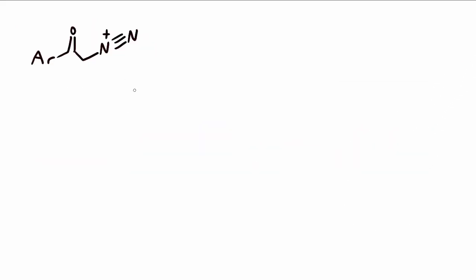And the thing about these alpha diazo ketones is they very much like to lose nitrogen. You can see that's basically just a molecule of dinitrogen waiting to escape as nitrogen gas. All it needs to do is take those electrons from the bond next to it.